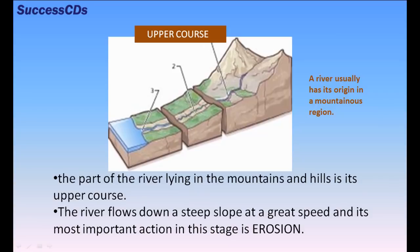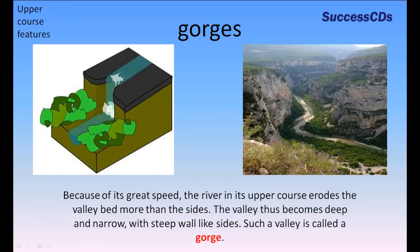The river flows down a steep slope at great speed and its most important action in this stage is erosion. Because of its great speed, the river in its upper course erodes the valley bed more than the sides. The valley thus becomes deep and narrow with steep wall-like sides, forming a gorge.